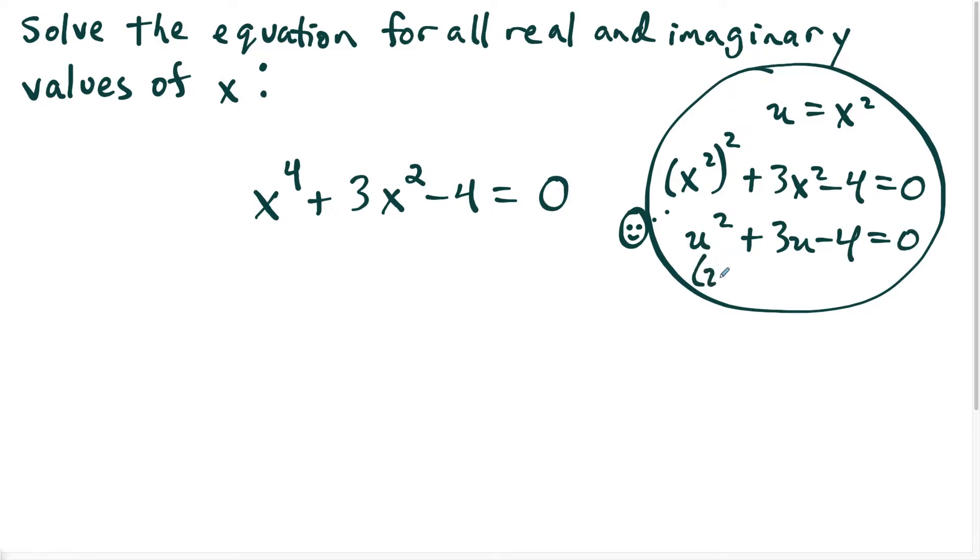And when I factor this, I have u plus four times u minus one is equal to zero because four minus one is three and four times negative one is negative four.